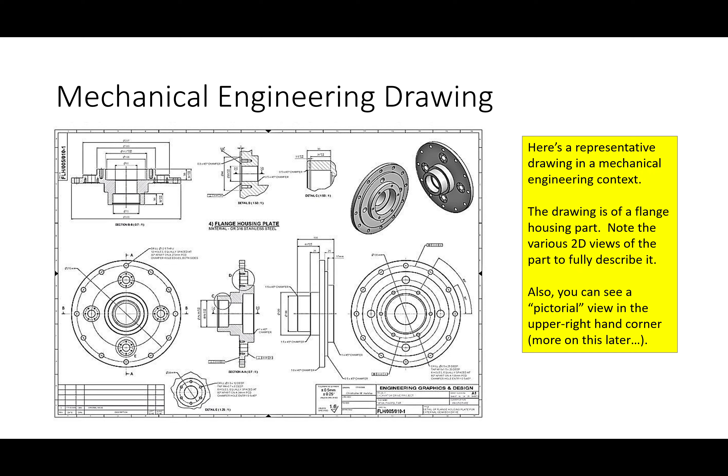I have here an example of a mechanical engineering drawing — a representative drawing of a flange housing part. There are a number of different views of the same part: looking at it from different directions, some section views where we're looking at the inside of it, and in the top right you can see an attempt to render the image in 3D, which we call a pictorial view. We'll talk more about that later.